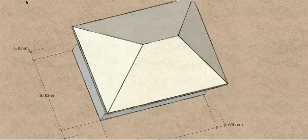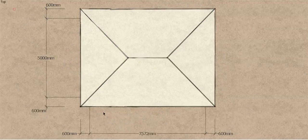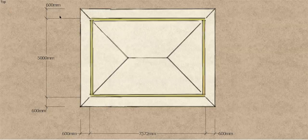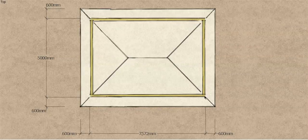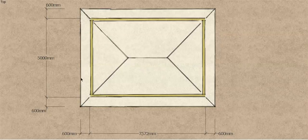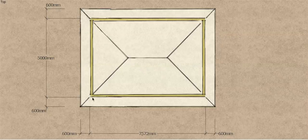Looking at the plan view we can see that the building is 7.572 meters long, with a 600mm overhang all round, and it's 5 meters wide or a span of 5 meters for our roof members.